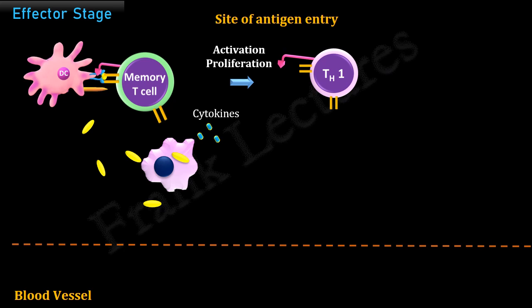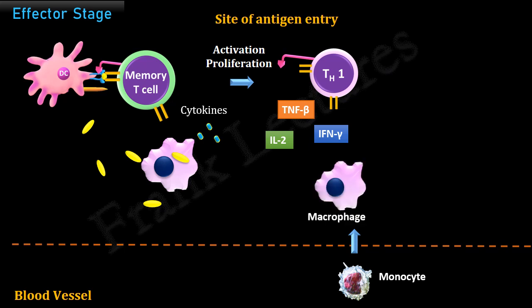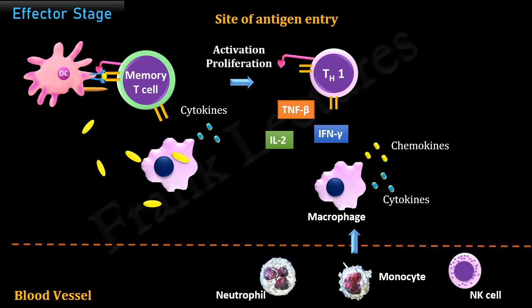These effector TH1 cells release cytokines such as interferon-gamma, tumor necrosis factor-beta, and interleukin-2. These accumulated cytokines at the site of infection recruit monocytes from circulation. Monocytes differentiate into macrophages when they migrate from blood to tissues. These macrophages get activated and further secrete cytokines and chemokines that recruit more monocytes, neutrophils, and natural killer cells to the site. All these activated effector cells release inflammatory mediators that damage host cells, and together they result in extensive amplification of the response. The effector stage takes 1 to 2 days, after which damage to the host becomes evident.